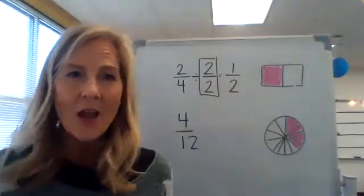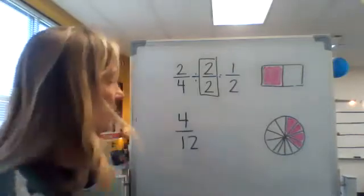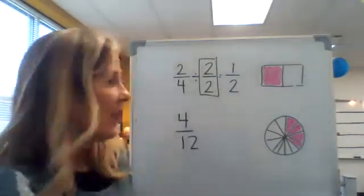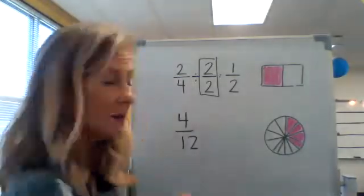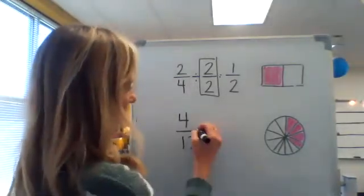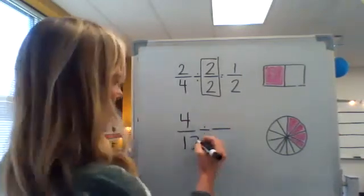Let me write some more models. Okay, 4/12. I want to create a new fraction, an equivalent fraction that equals the exact same amount, but it has a fewer number of parts. So what can I divide this by? I'm going to go ahead and divide it by fourths.